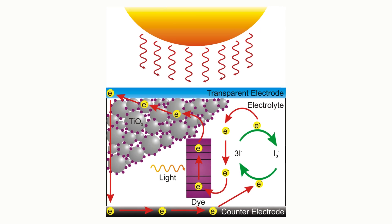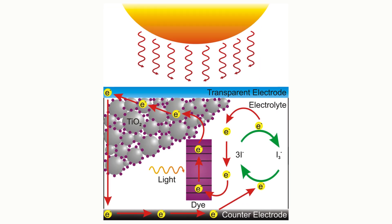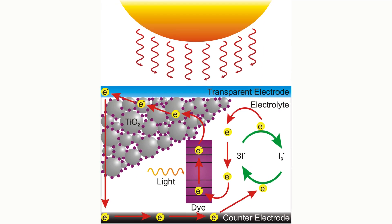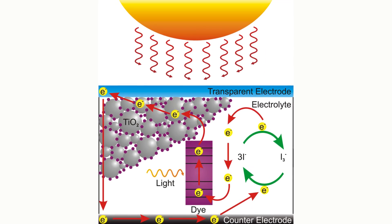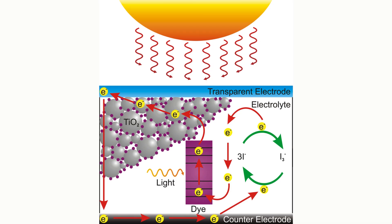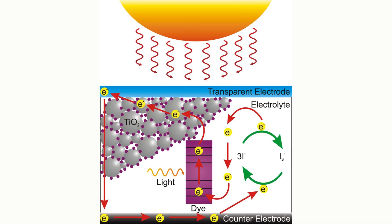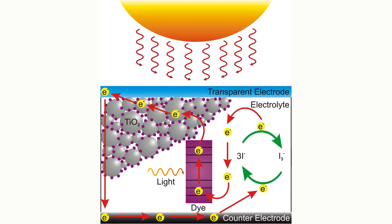A dye-sensitized solar cell, DSSC, works by using a dye to absorb sunlight, which injects electrons into a titanium dioxide semiconductor layer.